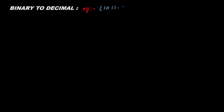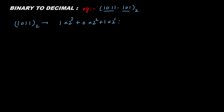Let the binary number be 1011.101 to the base 2. This number has two parts: the integer part and the fractional part. First I will consider the integer part. I can write this as: one into two to the power three, plus zero into two to the power two, plus one into two to the power one, plus one into two to the power zero.